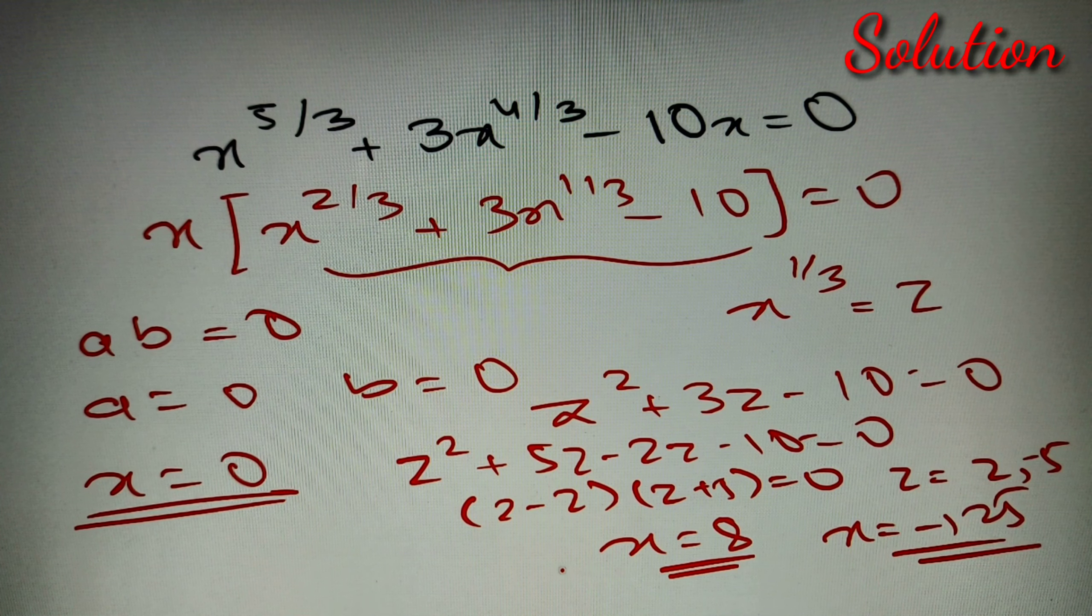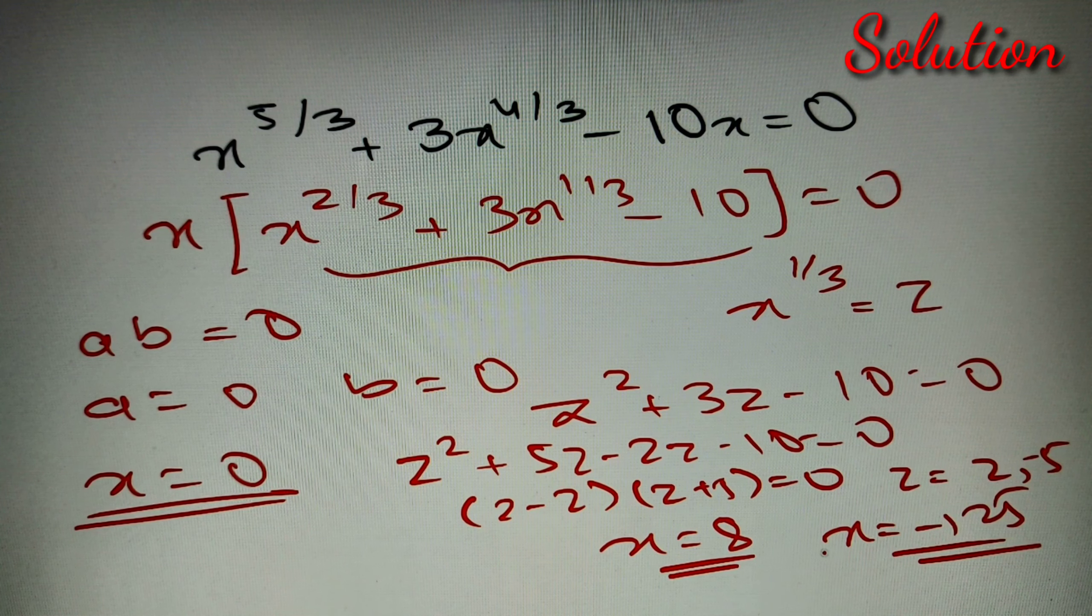So we have got three values of x: one is 0, second is 8, and third is -125.